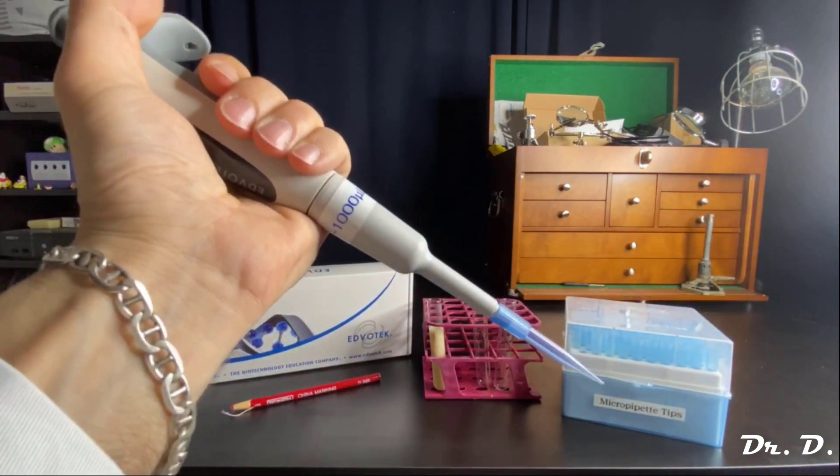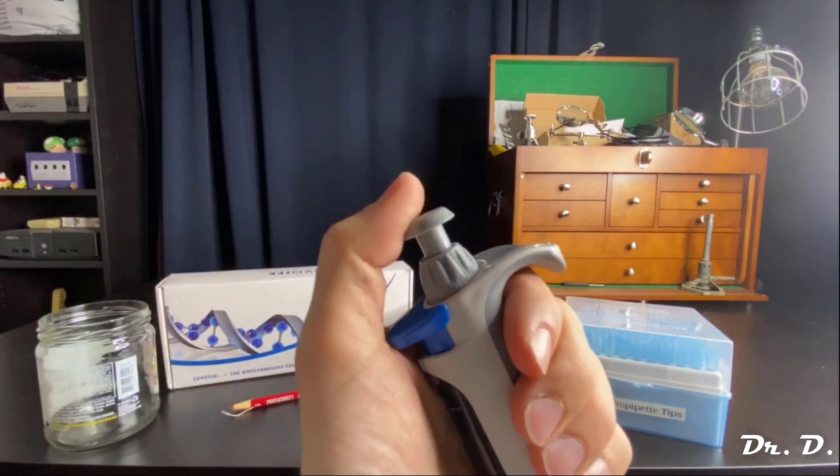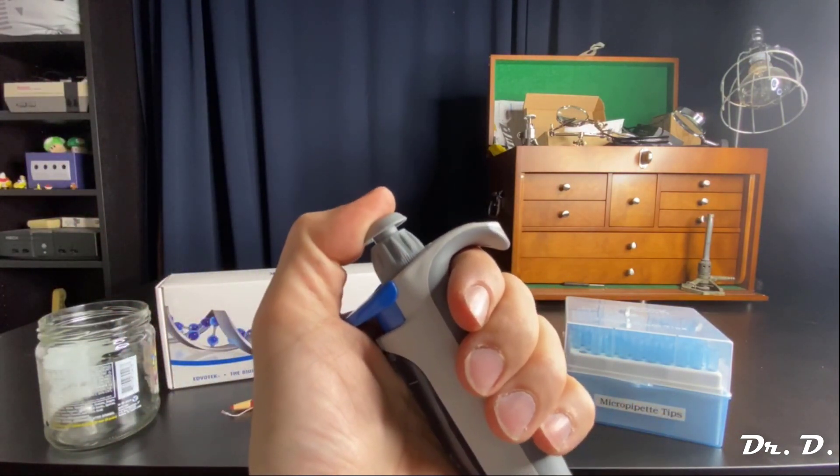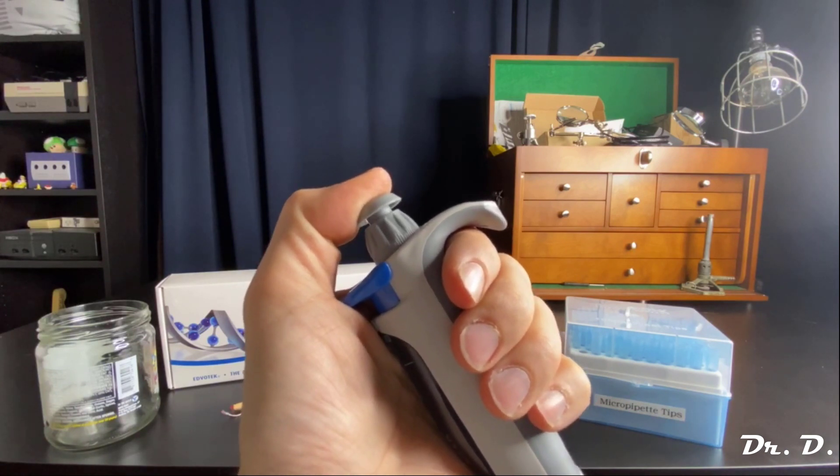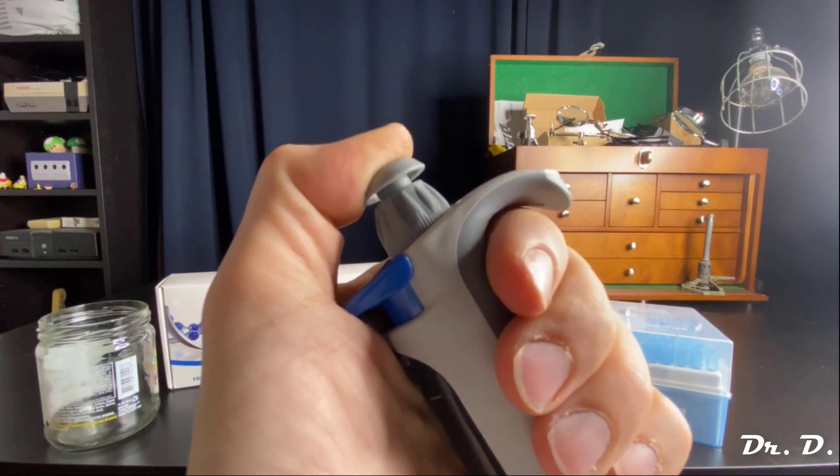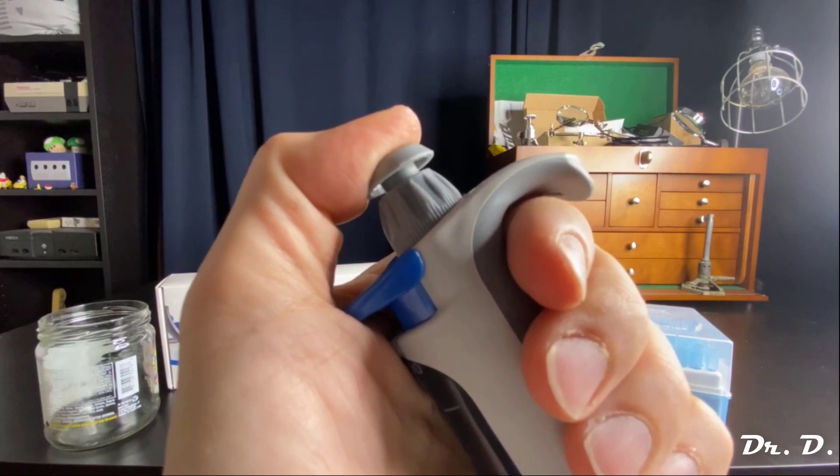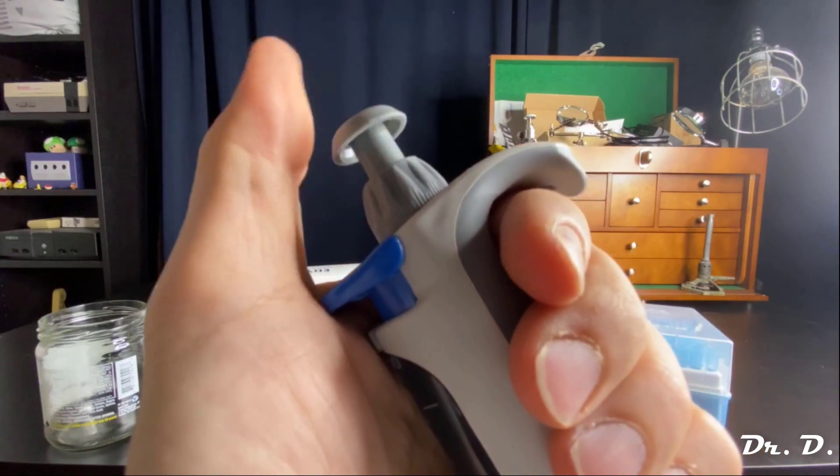Now here's the trick to pipetting. There are two stops on the plunger. Look at the plunger here. When I push, the plunger stops. However, if I push harder, watch this, it goes further. Did you guys see that? There are two stops. Stop one and stop two.